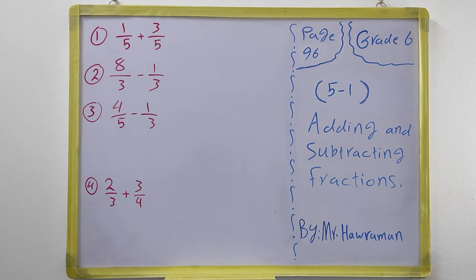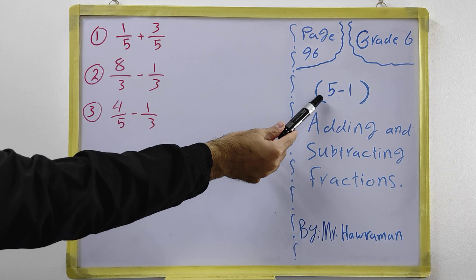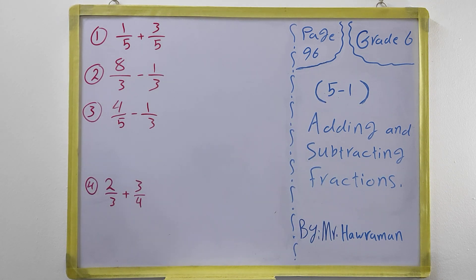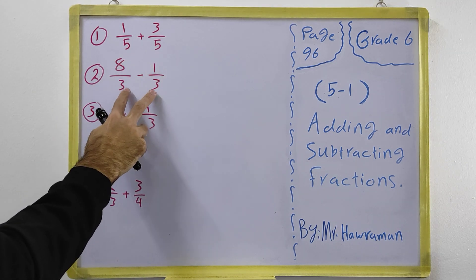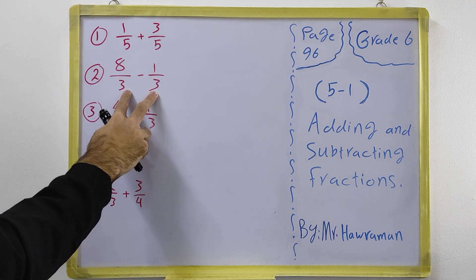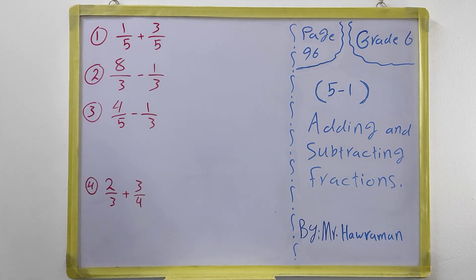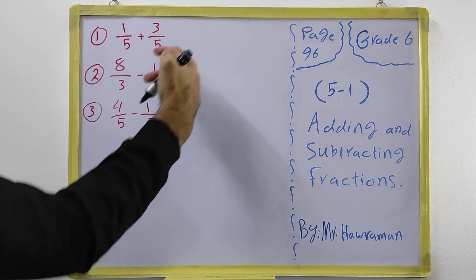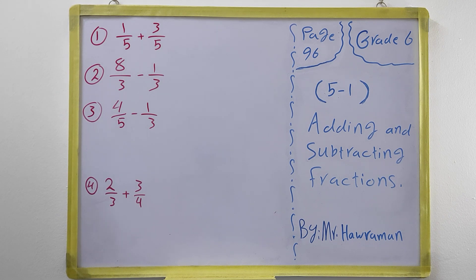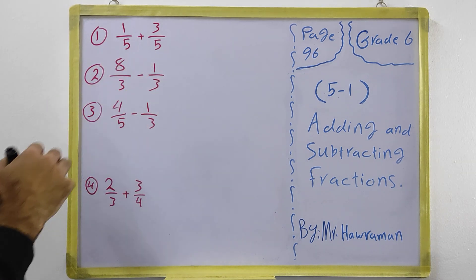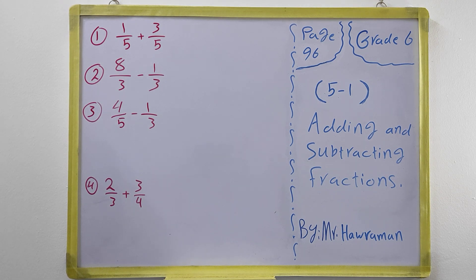Hi everyone. In this video for grade 6 we have page 96, chapter 4, section 1: adding and subtracting fractions. In adding and subtracting fractions we have two types: one where the denominators are the same, and one where they are different. The rule is: the denominators must always be the same before you can add or subtract two fractions.